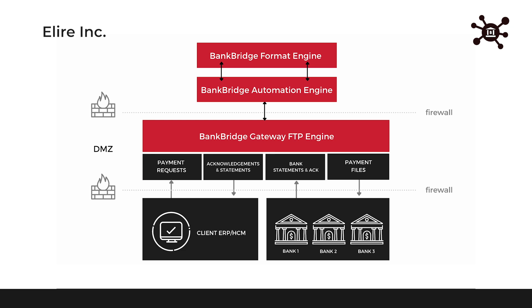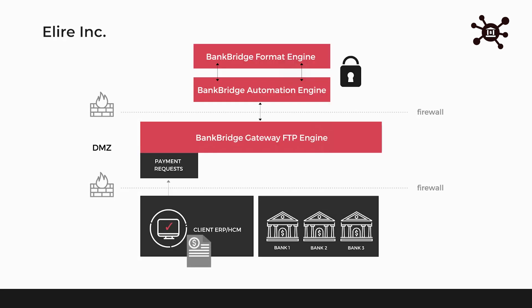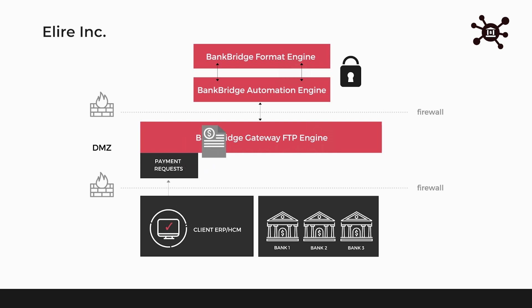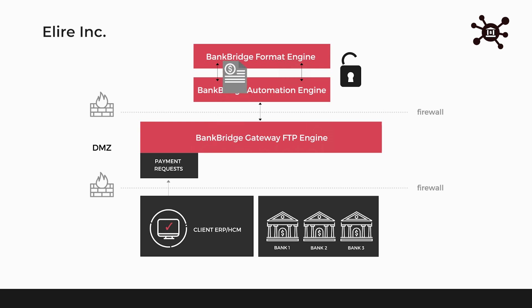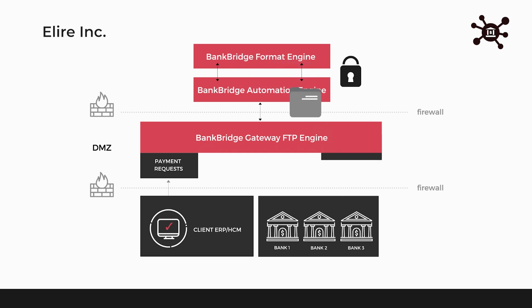Let me walk you through that process. Starting at the bottom left, the client's ERP application would send a single file for all their banks into the bank gateway engine. The automation tool would then pick up that file and move it to the format engine based on rules. The format engine would generate, in this case, three separate payment request files. The engine would then send those payment files through the gateway to each one of the banks.